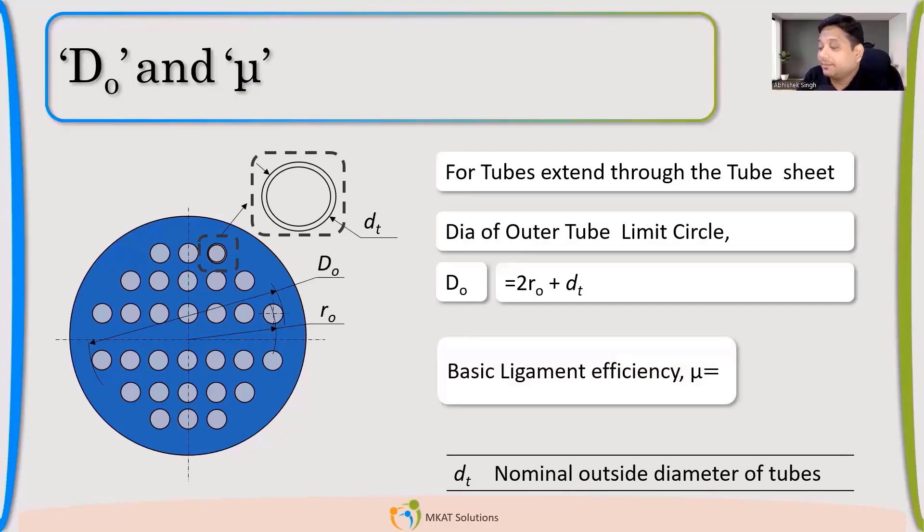Now, ligament efficiency. If I try to calculate ligament efficiency, just using some logic, what other terms will be coming? Is it related to pitch? So basically, pitch earlier, the basic pitch, which is the total pitch. P minus DT divided by P.